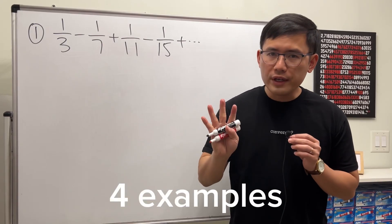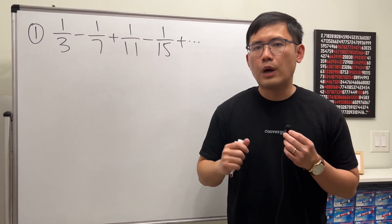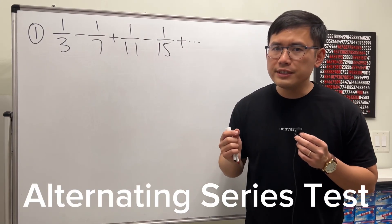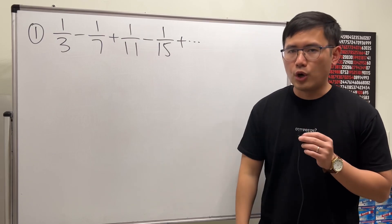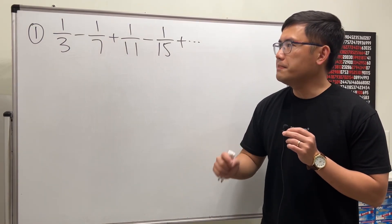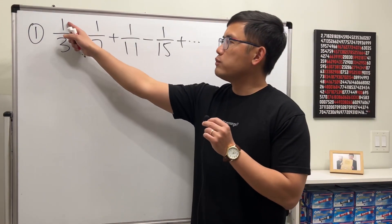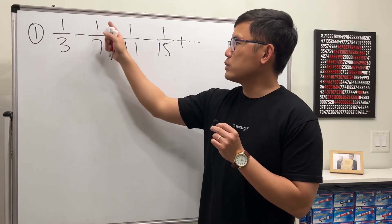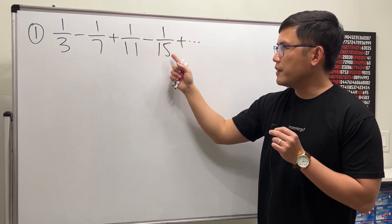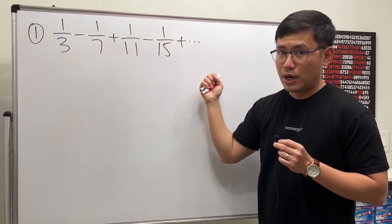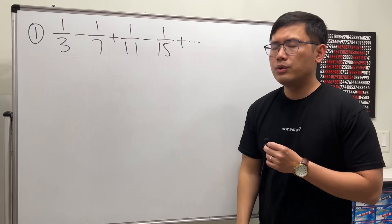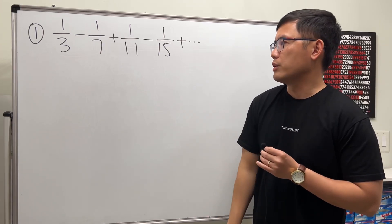We are going to go over four examples of how we can use the alternating series test to show if a series converges or not. This is the first one: 1/3 minus 1/7 plus 1/11 minus 1/15 and so on. Let's put this into sigma notation form.